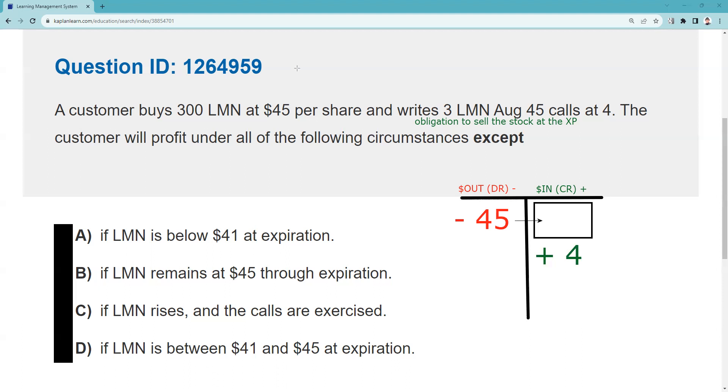All right, so all the following except—so it's asking me which one of these numbers is not profitable. Now what I suggest is you have to get the T right. You can use process of elimination. I try $41, and if I plug $41 in there, that's the break-even—$45 out, $45 in. But it says below $41, so yeah, below $41 that's not going to be profitable. So that's one way to proceed.